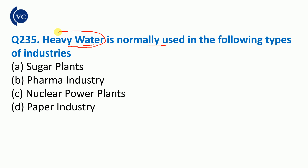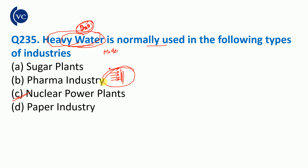In which industry do we use heavy water? We use heavy water, also called deuterium oxide or D2O. Deuterium is an isotope of hydrogen. D2O is used as a moderator in nuclear reactors or nuclear power plants. As a moderator, it slows down the speed of neutrons in the nuclear reaction.